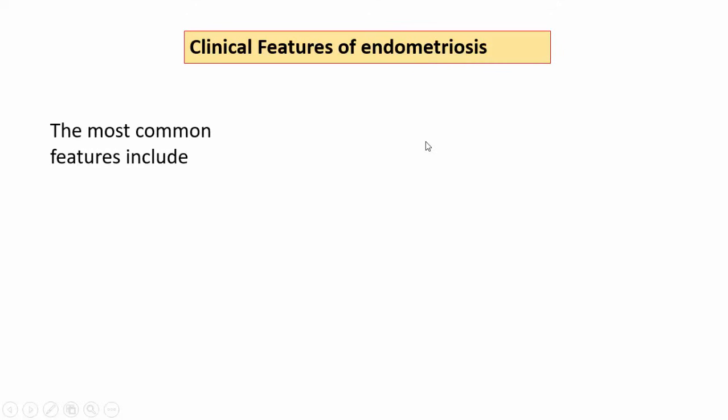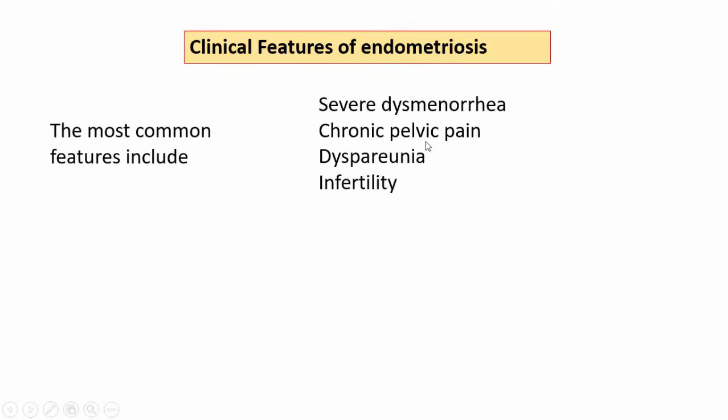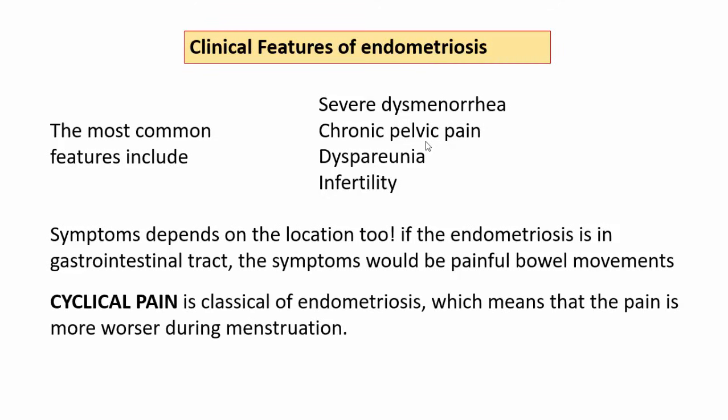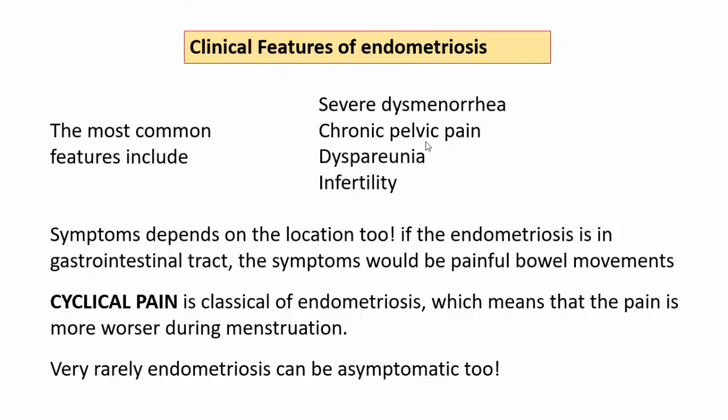Now what are the clinical features of endometriosis? The most common features include severe dysmenorrhea, chronic pelvic pain, dyspareunia, and infertility. Of course, the symptoms depend on the location too — for example, if endometriosis is in the gastrointestinal tract, symptoms would include painful bowel movements. Cyclical pain is another classical feature, meaning pain is worse during menstruation. Very rarely, endometriosis can be asymptomatic.